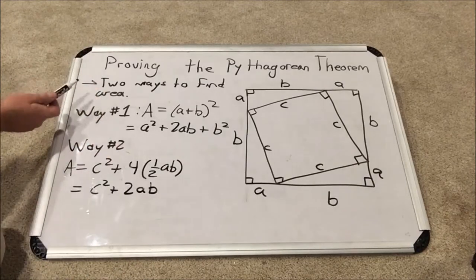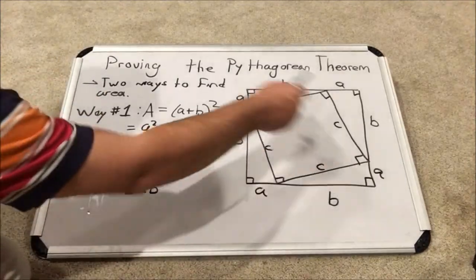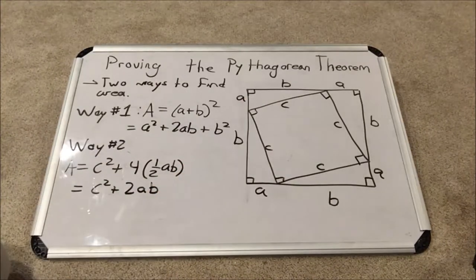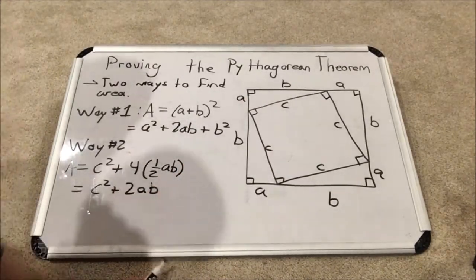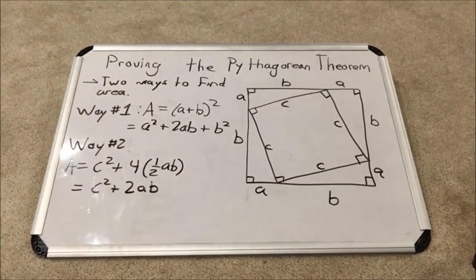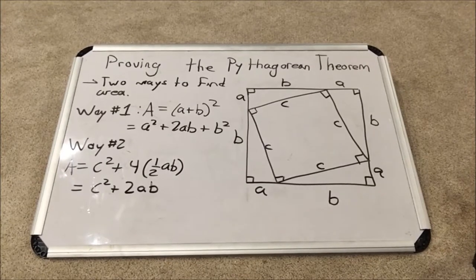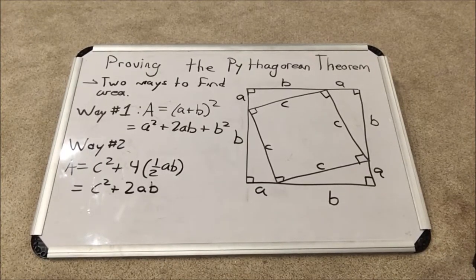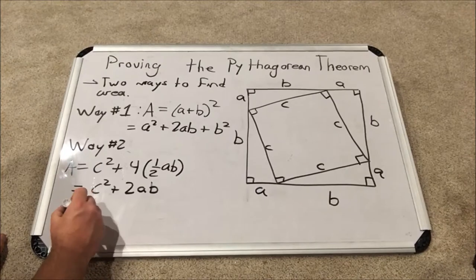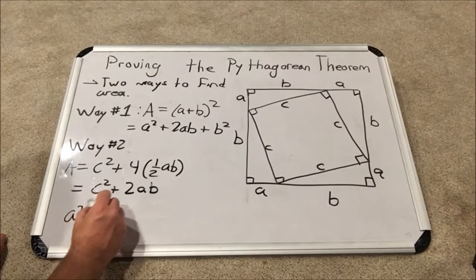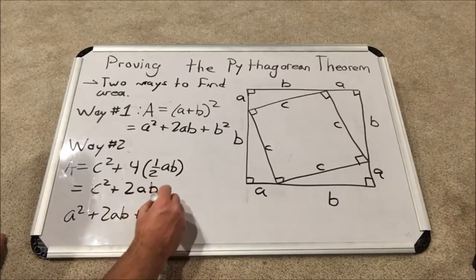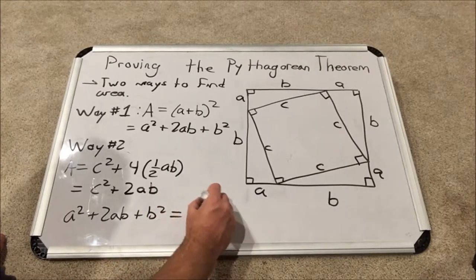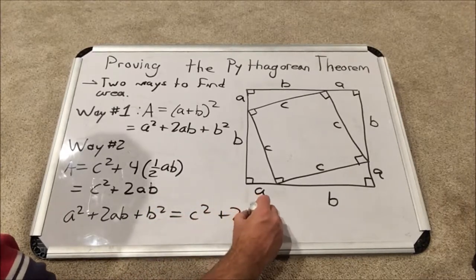Now, I said that these were two ways to find the same area, the area of the full square, the big square. So I can set these two expressions equal to each other because they are finding the area of the same large square. So that means A squared plus 2AB plus B squared is equal to C squared plus 2AB.